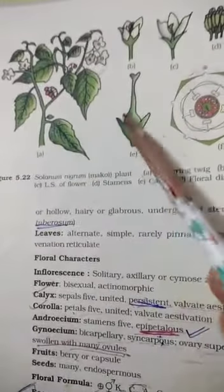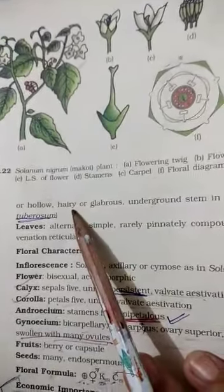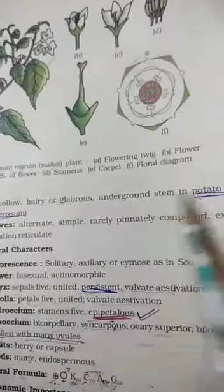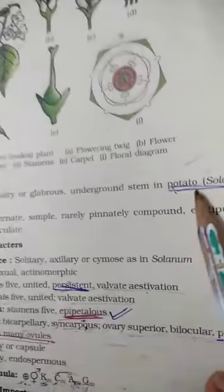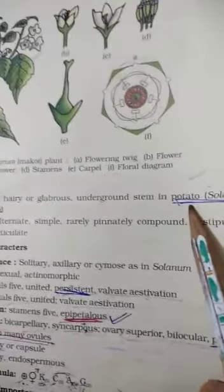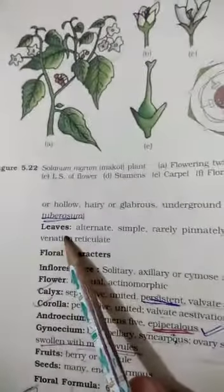They have shown the stem that is hairy, and underground stem of potato also belongs to this class. This is one exceptional example where the potato, which is Solanum tuberosum, whose stem is underground. In the rest of the plants, the stem is above the ground which is erect. Now it comes to the leaves.